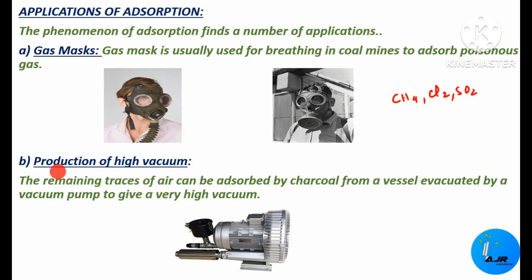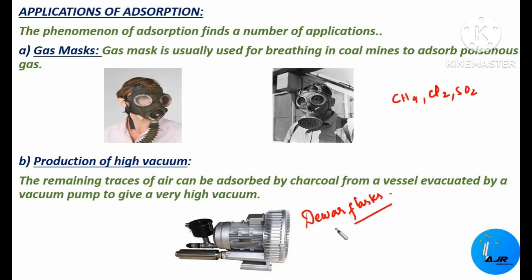The next important application of adsorption is production of high vacuum. The remaining traces of air can be adsorbed by charcoal from a vessel evacuated by a vacuum pump to give a very high vacuum. After removal of gases by the vacuum pump, remaining traces of air can be removed using adsorbents. In a Dewar flask, activated charcoal or silica gel are placed between the walls of the flask, so any remaining traces of air or gas entering the annular space get adsorbed and the vacuum remains preserved.